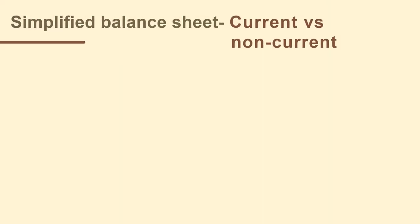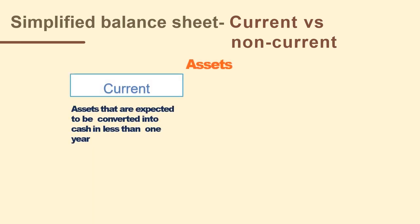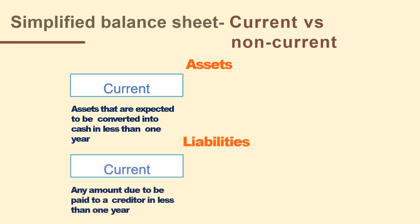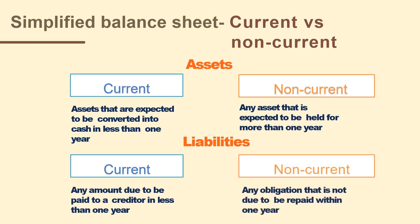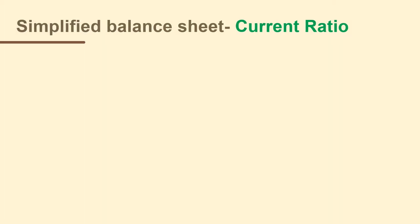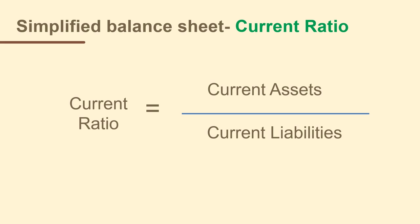Current assets are assets expected to be converted into cash in less than one year. Current liabilities are any amount due to be paid to a creditor in less than one year. A non-current asset is any asset expected to be held for more than one year, and a non-current liability is any obligation not due to be paid within one year. The current ratio equals current assets divided by current liabilities. A rough rule of thumb is that a current ratio greater than one is good, implying more liquid assets than short-term liabilities. However, many companies with a durable competitive advantage can have a current ratio less than one, because of their great earning power — they pay back dividends and buy back stock, which can lower their cash reserves.